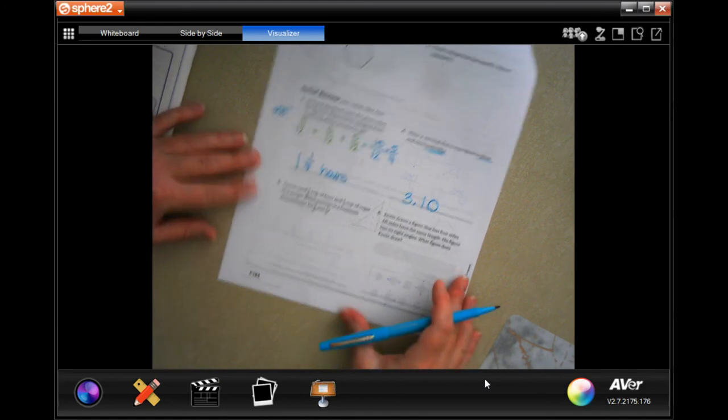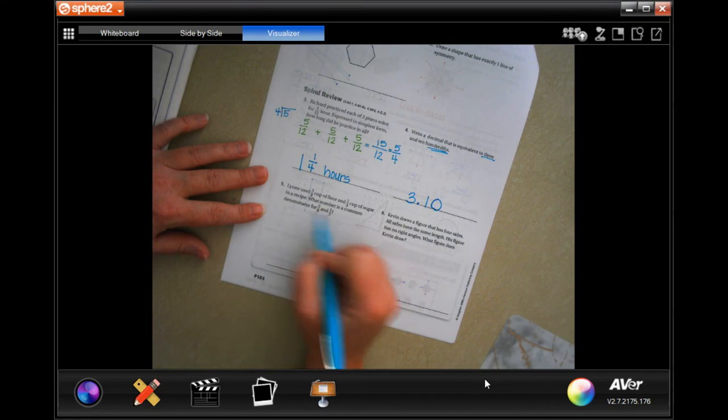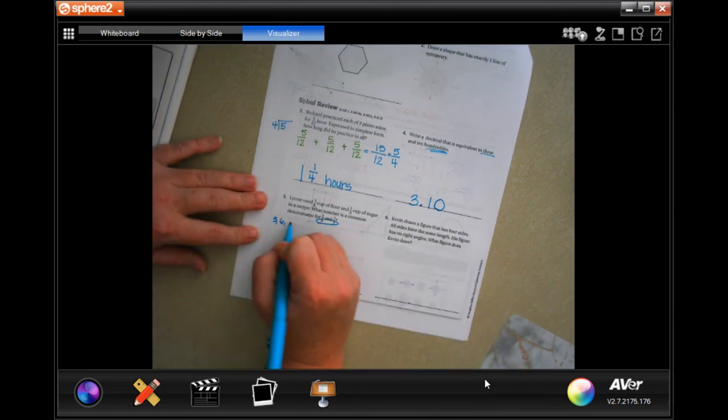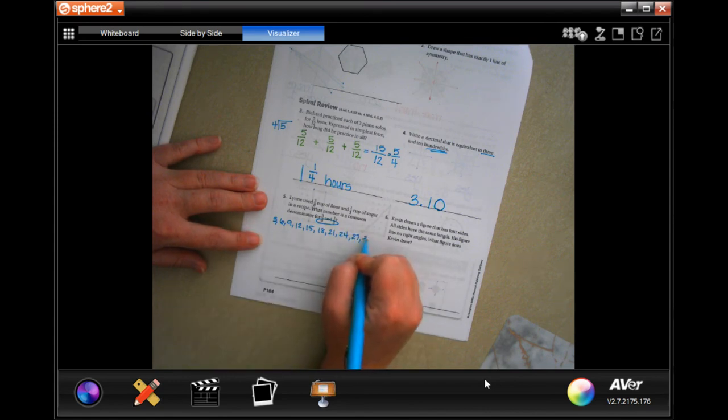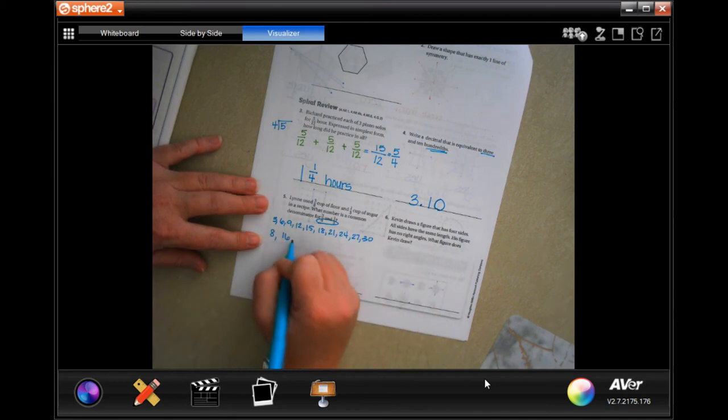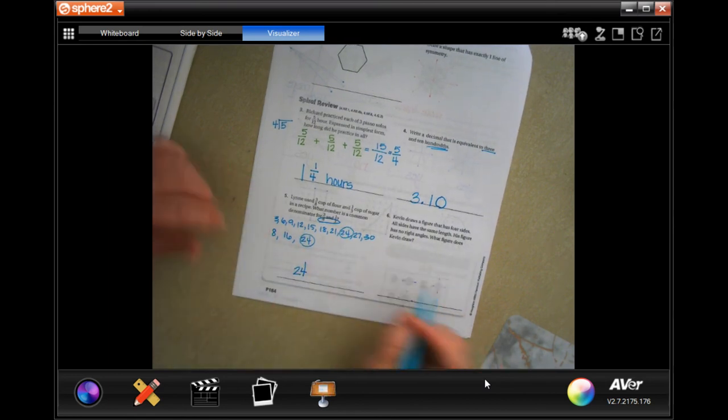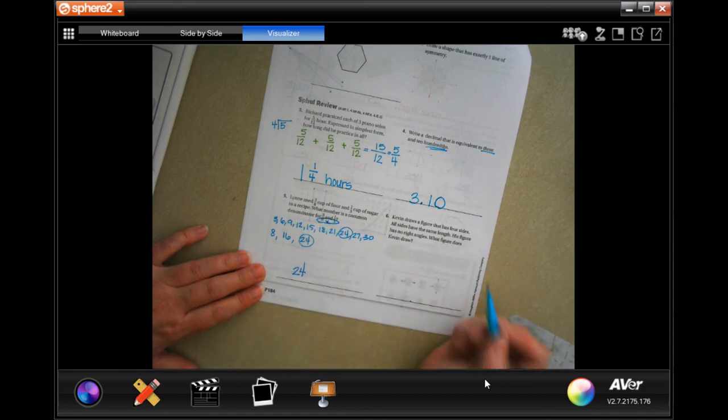Lynn used 3/8 of a cup of flour and 1/3 cup of sugar for a recipe. What number is a common denominator for 8 and 3? Well, three: 6, 9, 12, 15, 18, 21, 24, 27, and 30. And then I'm going to go eight: 8, 16, 24. Oh look at that, so 24. You could also multiply 8 and 3 and get 24.